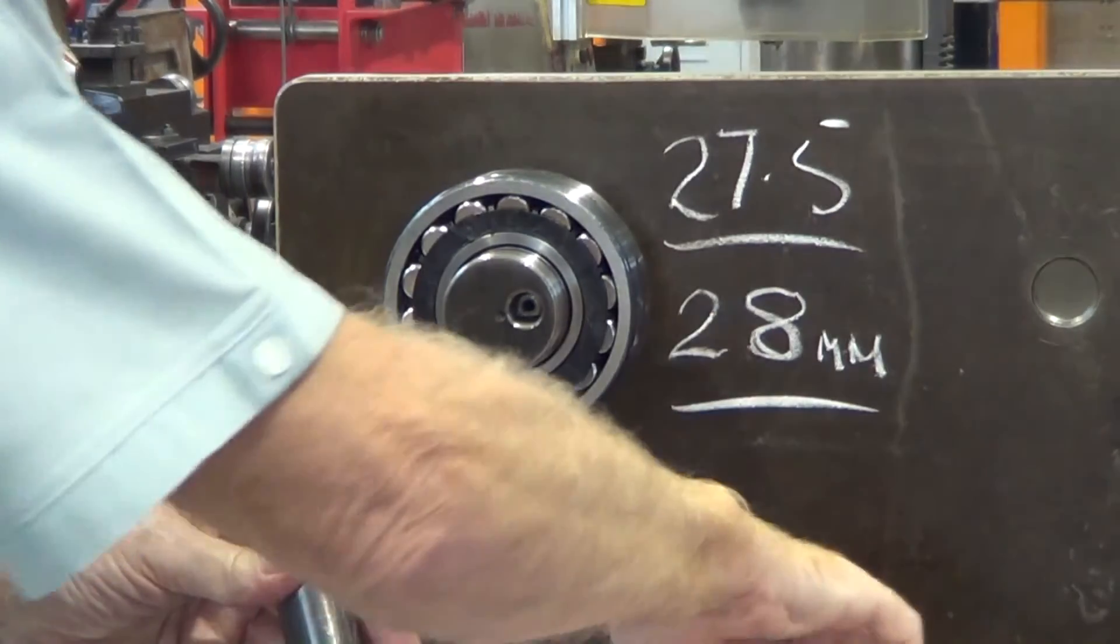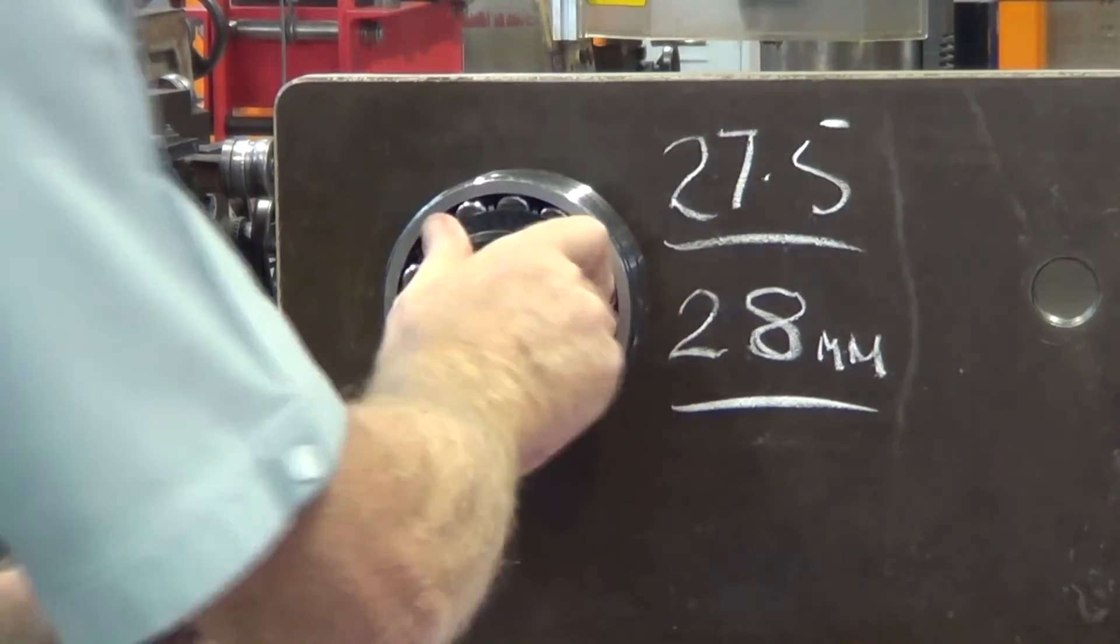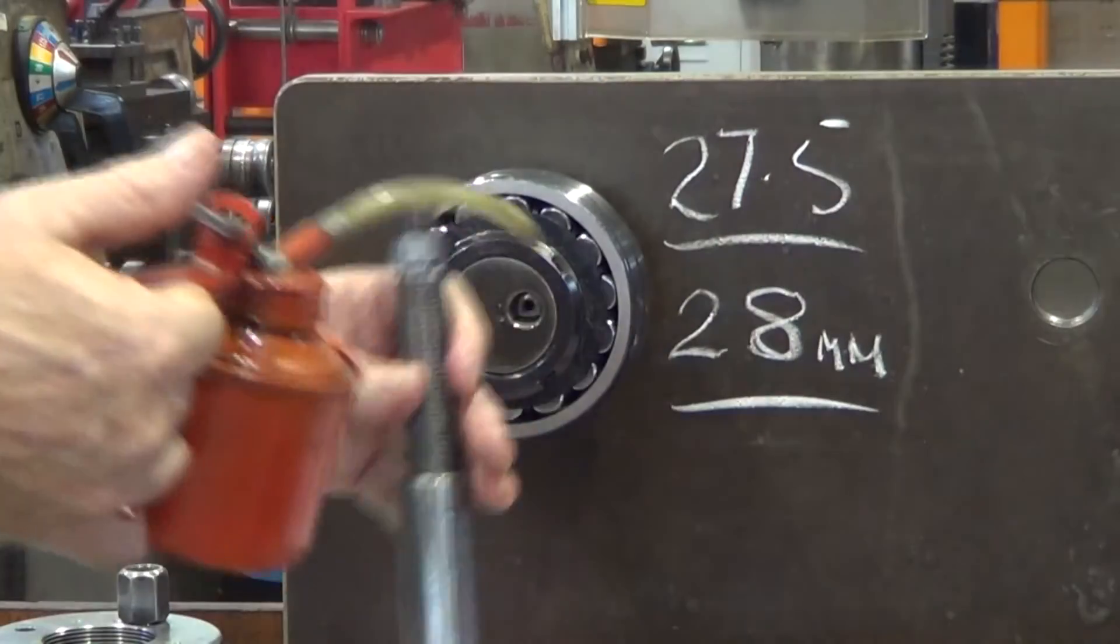Put the lock nut on, just on to the end of the shaft so when the bearing releases and comes forward it can't come flying off the end of the shaft.